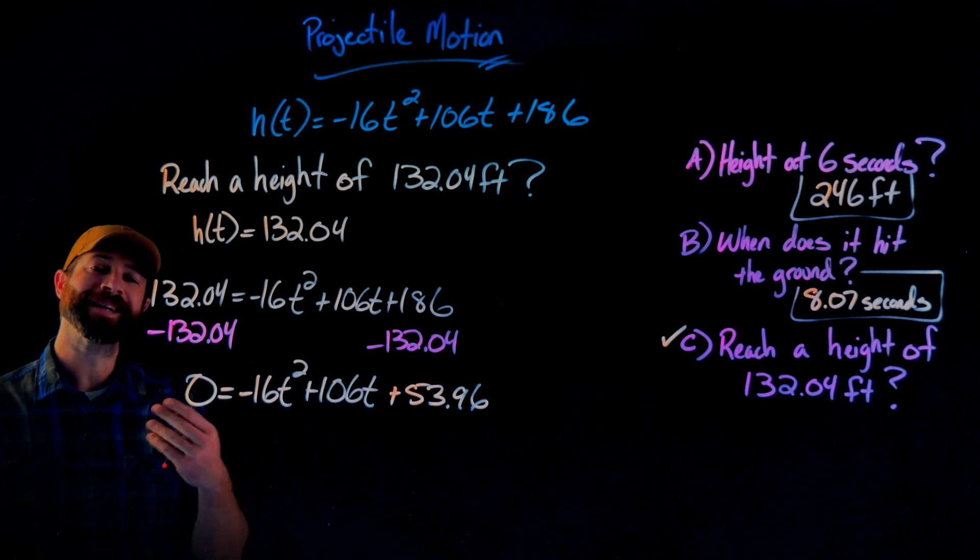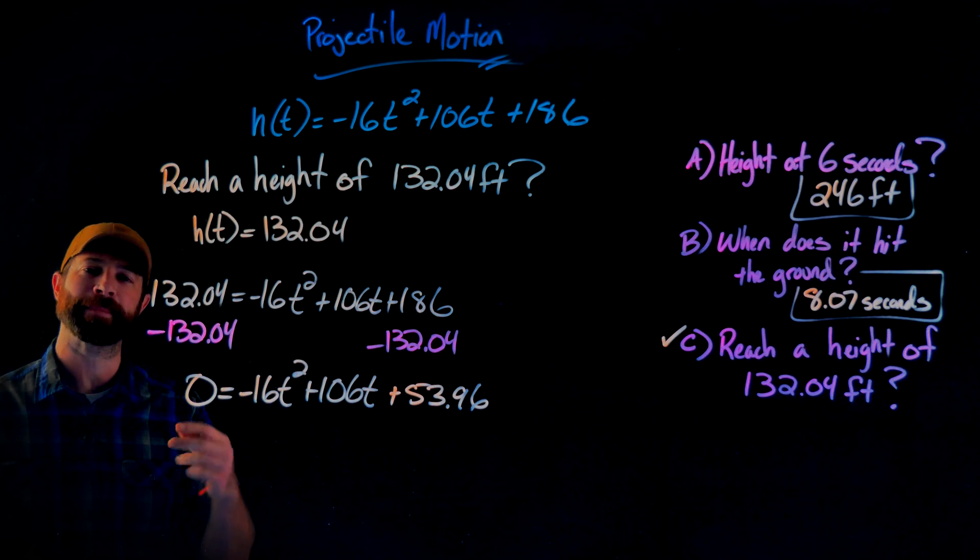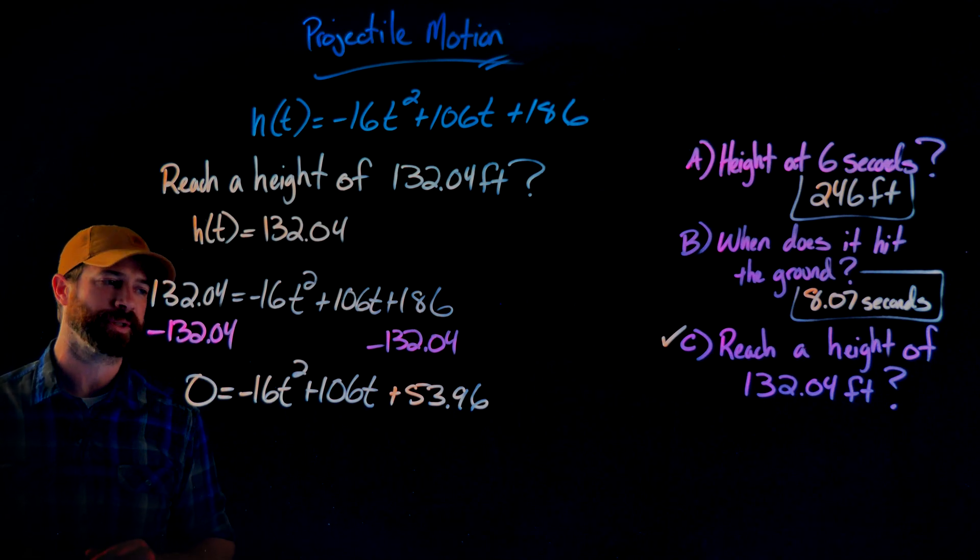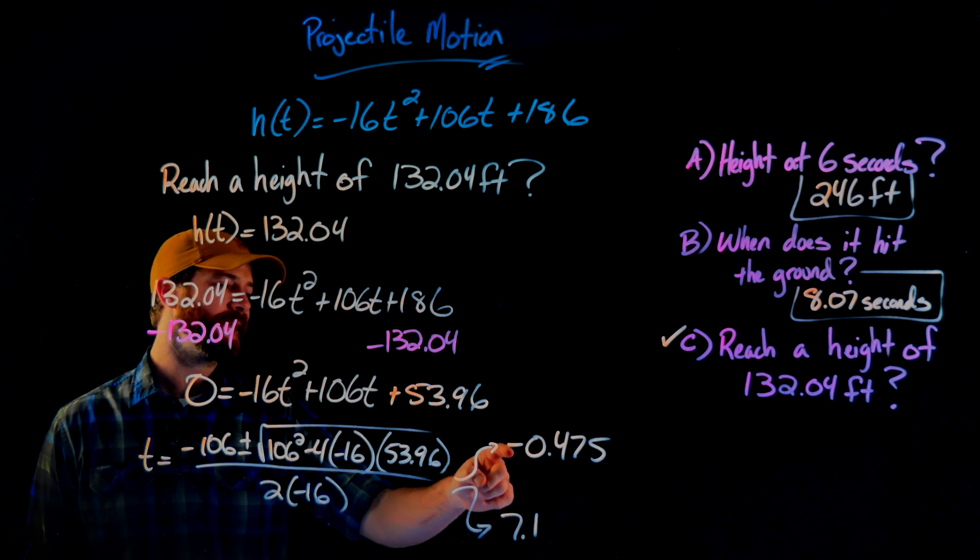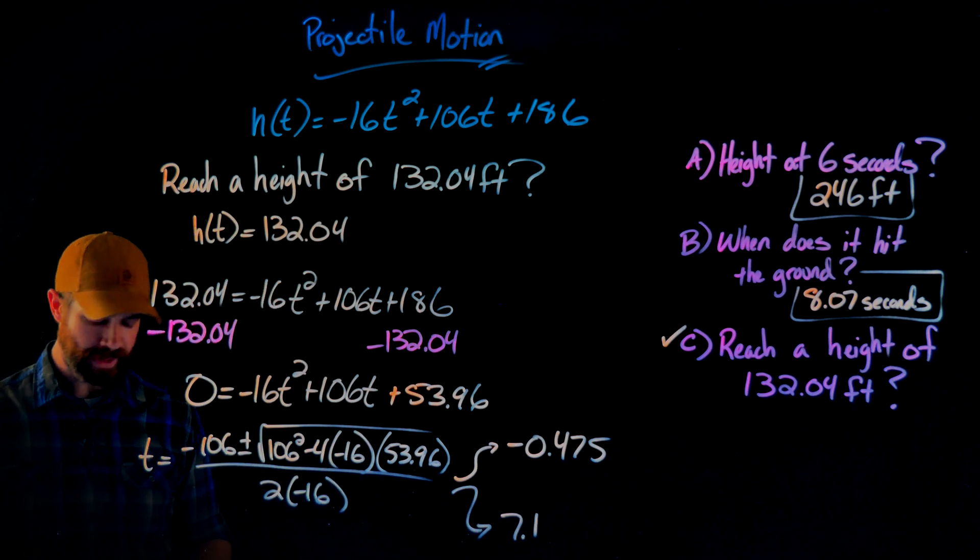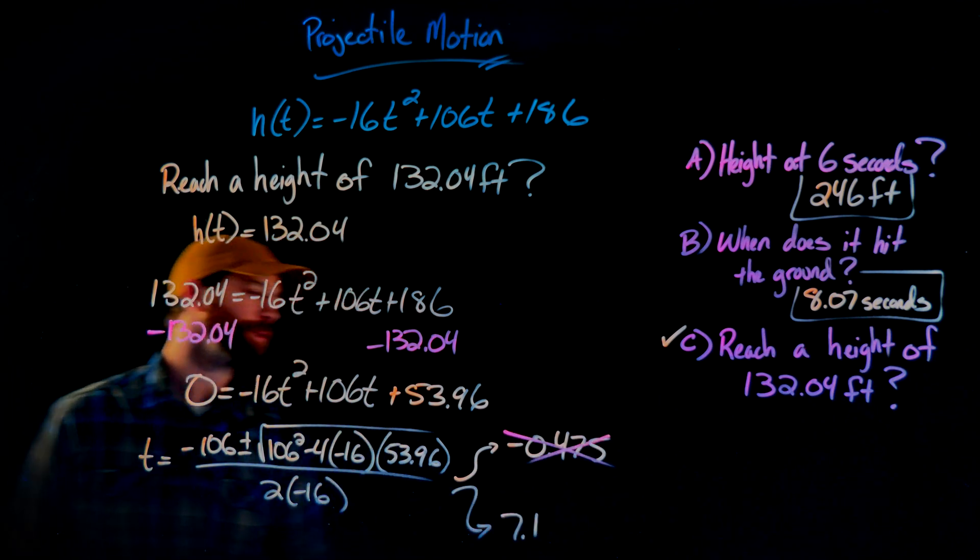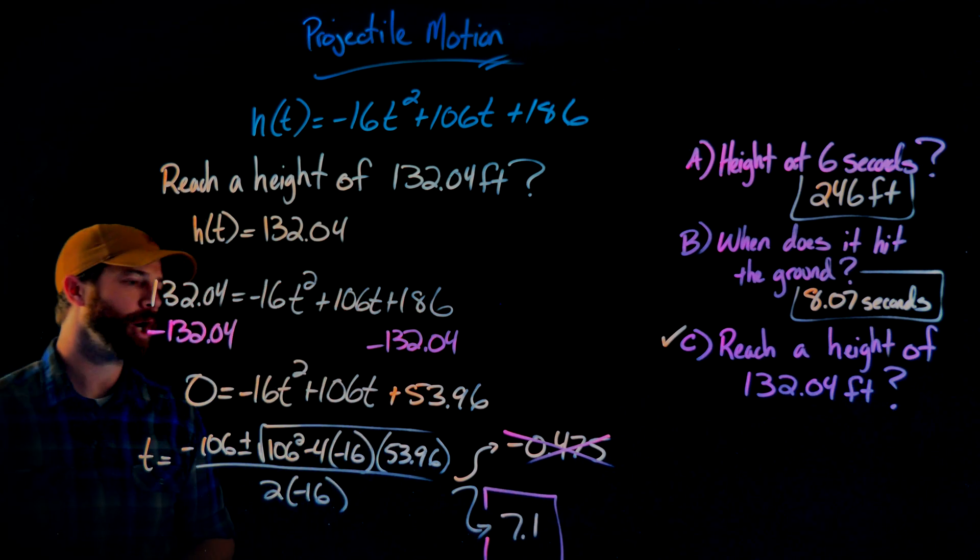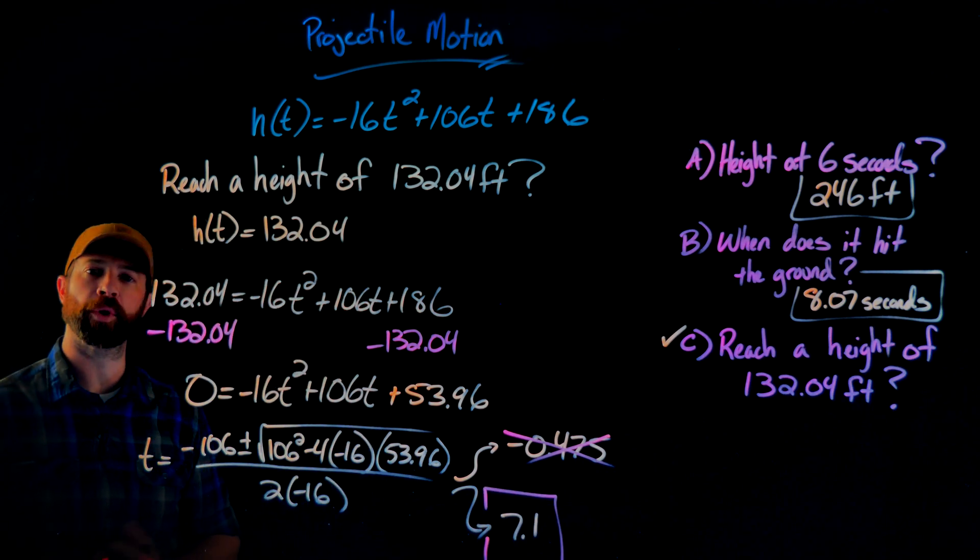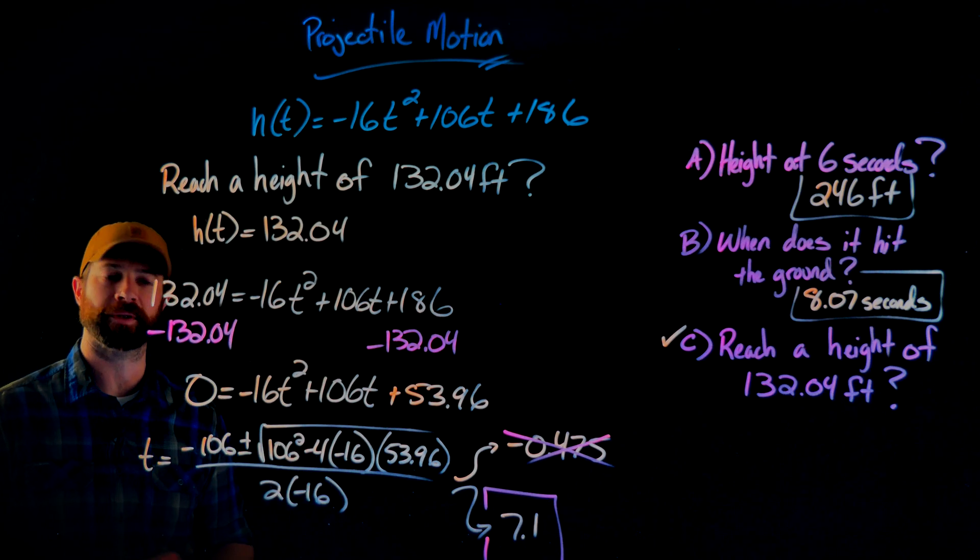As before, if I get a negative solution, I won't consider that because I'm not thinking of back in time. I'm only considering positive solutions here. When I calculate this all out, what I got are two answers, one of negative 0.475 and 7.1. As stated before, I'll ignore the negative value of time and just use that the time when this object reaches 132.04 feet is 7.1 seconds after it was launched.